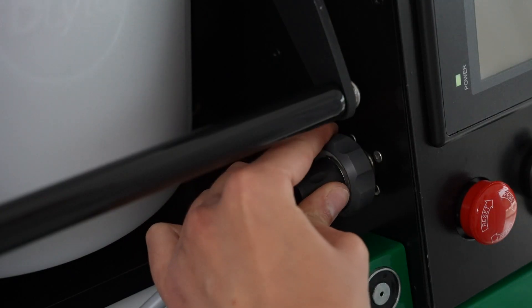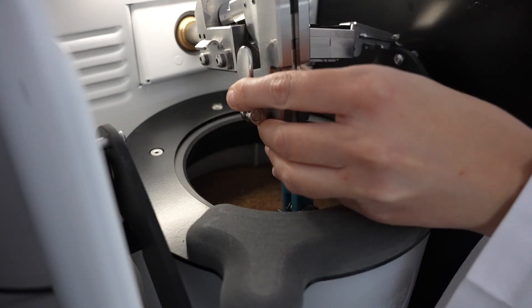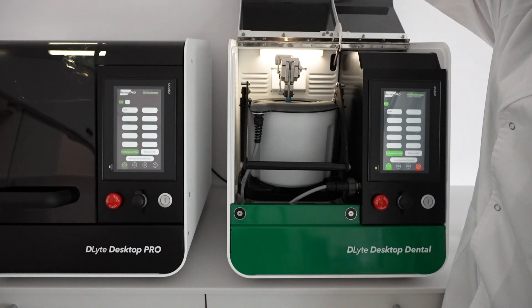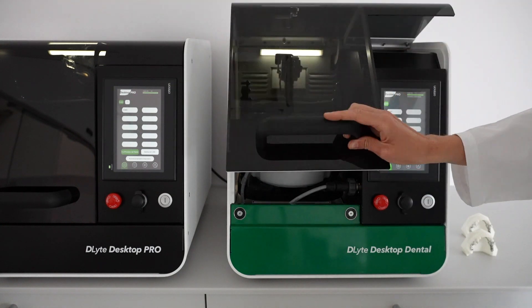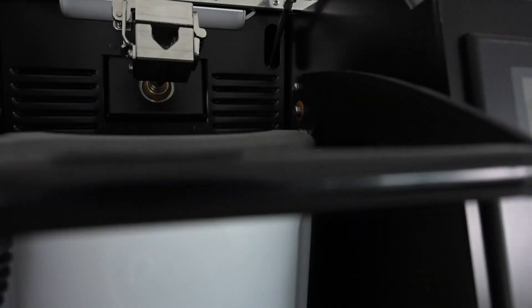D-Lite Desktop Series are available in two versions. D-Lite Desktop Dental, aimed at dental laboratories and designed for the treatment of cobalt chrome pieces such as removable partial dentures, bars, and crowns.